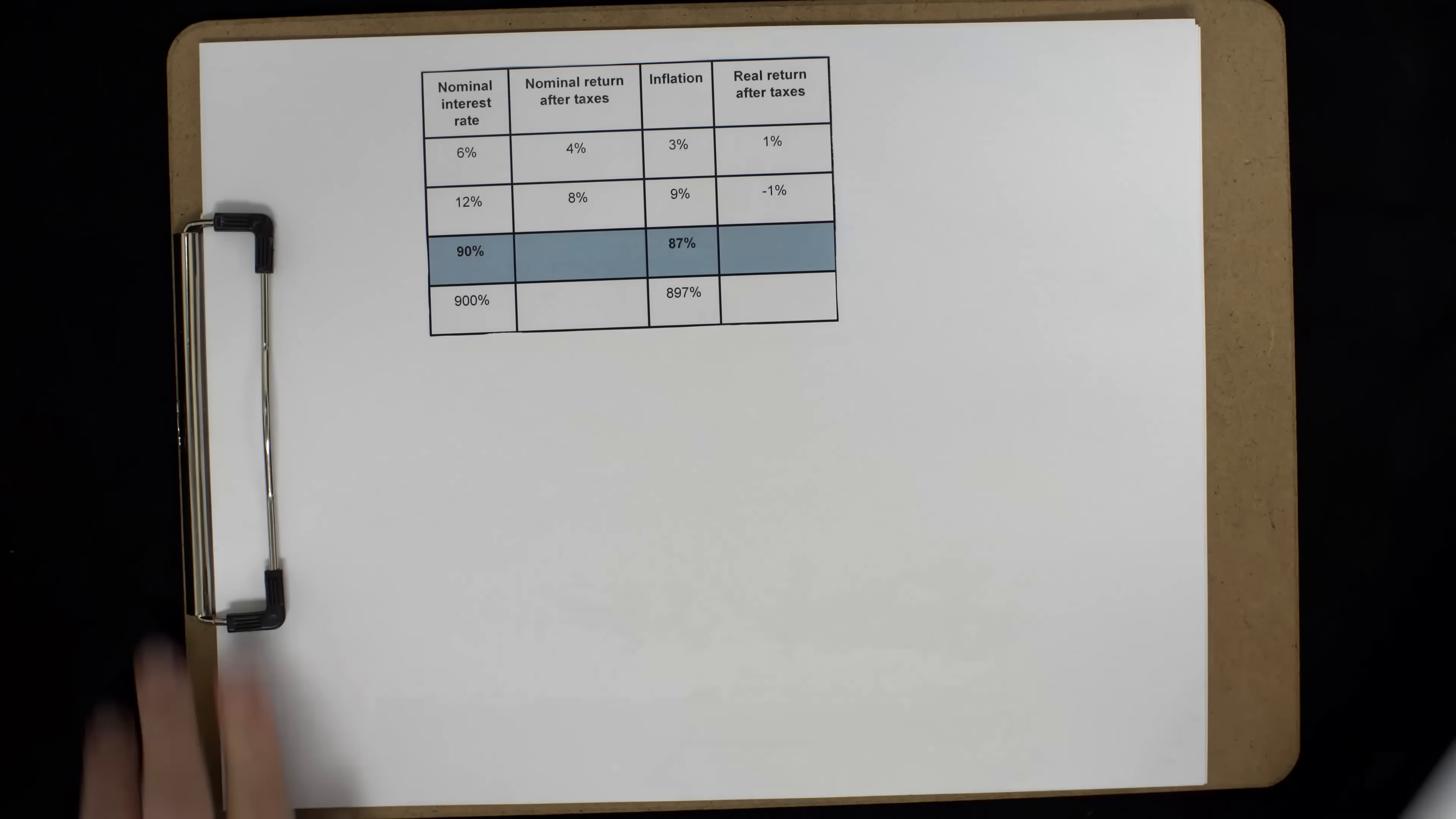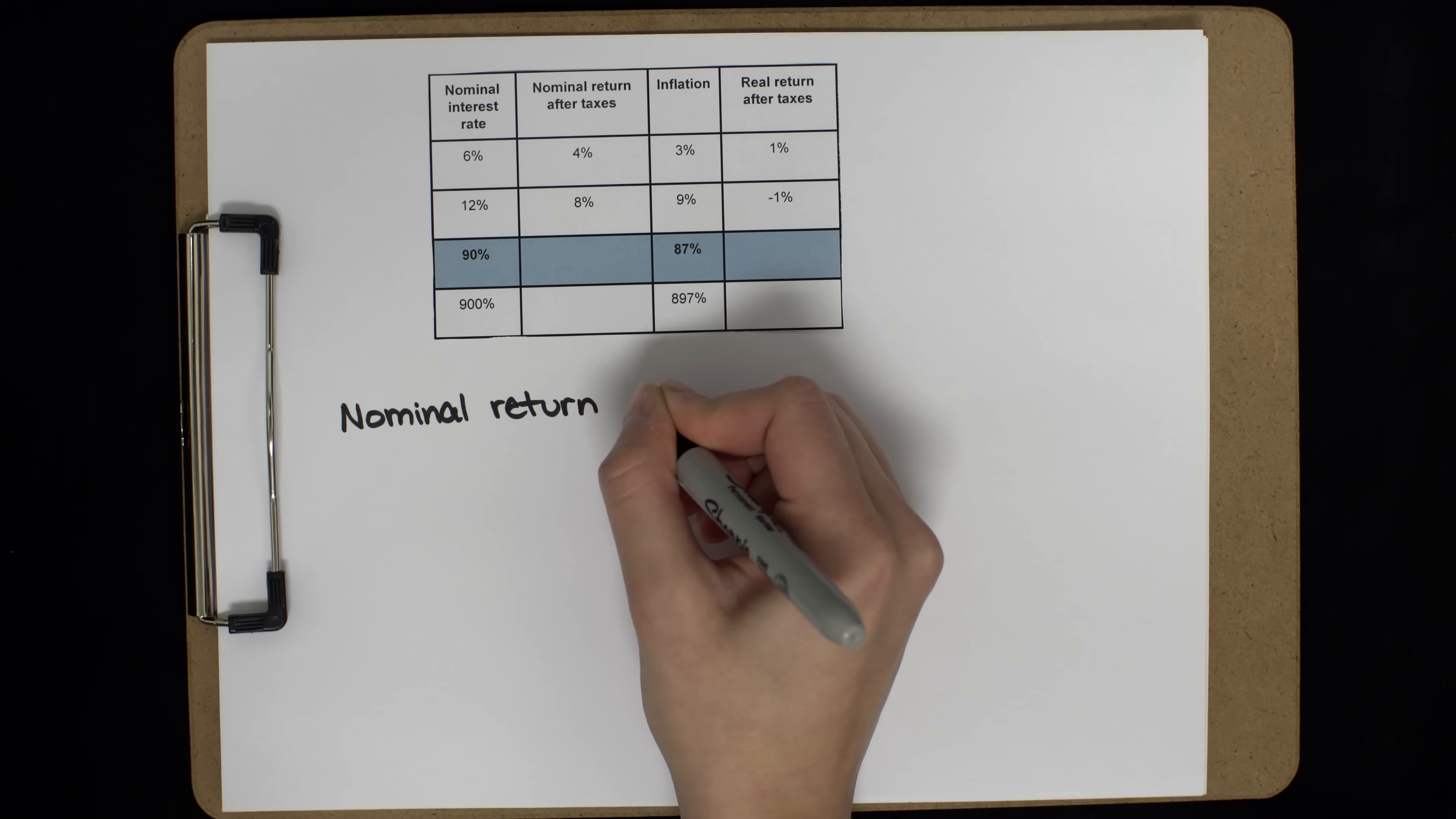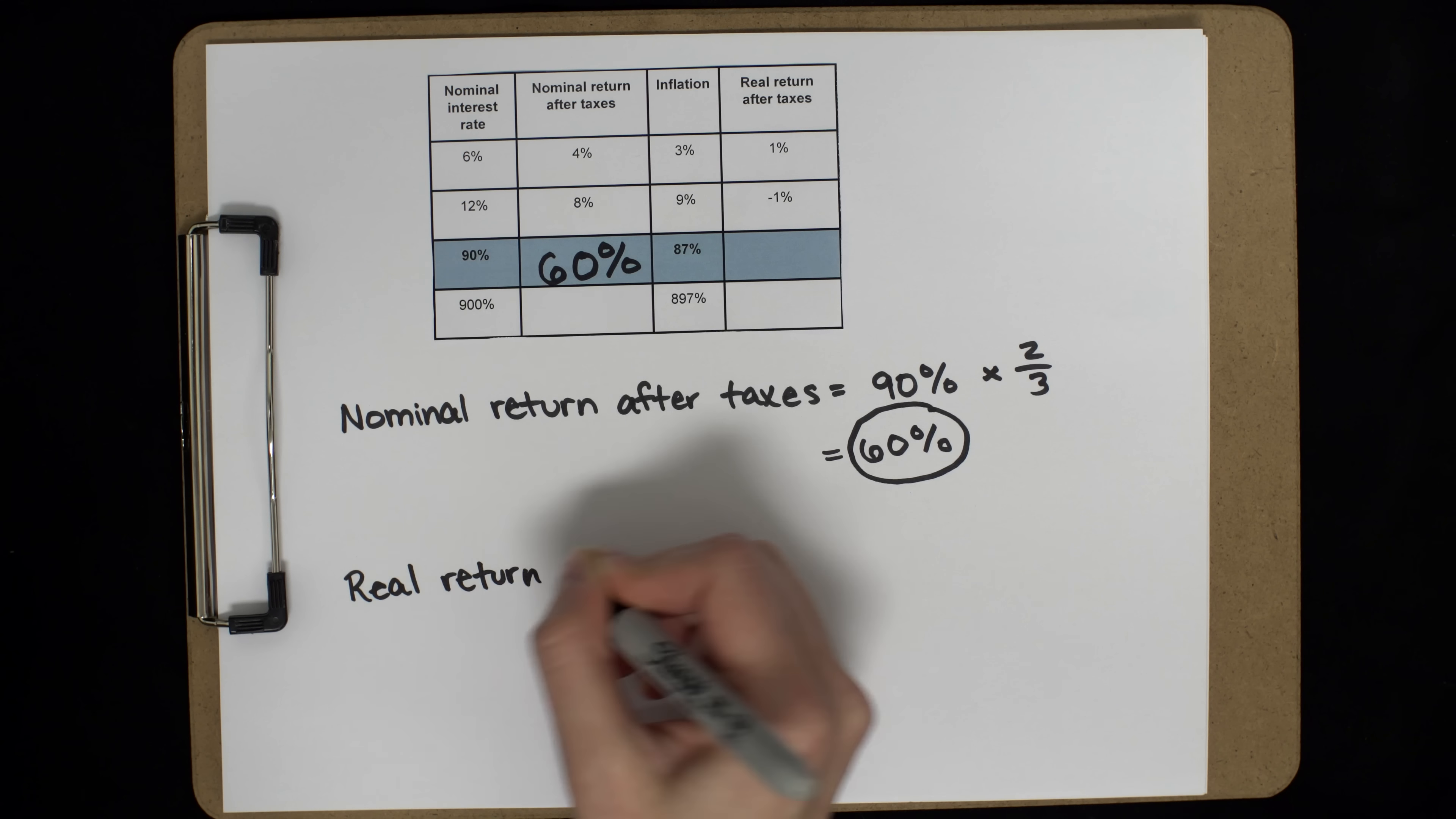Now, it's time to get more extreme. Let's say inflation is 87% per year, and the nominal interest rate is 90%. Once again, the nominal rate of return after taxes is 90 times 2 thirds, or 60%. And the real rate of return after taxes?